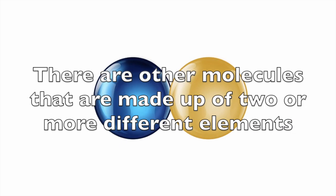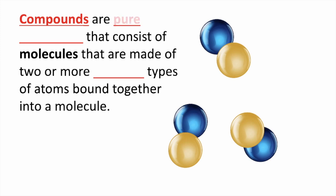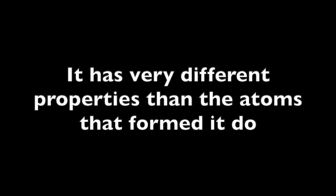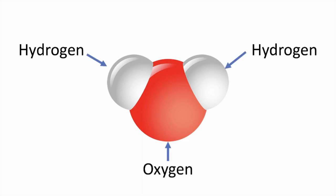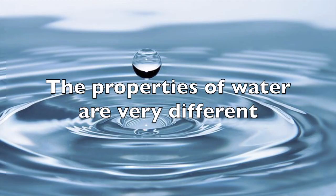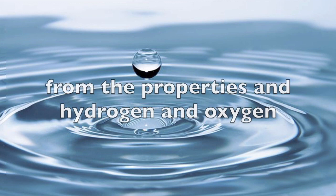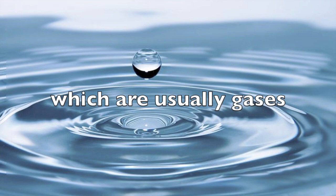There are other molecules that are made up of two or more different elements. Compounds are pure substances that consist of molecules that are made of two or more different types of atoms bound together in a molecule. The atoms in the compound are bound so strongly that the compound behaves like one substance. It has very different properties than the atoms that formed it. For example, water is made of two hydrogen atoms and one oxygen atom, but the properties of water are very different from the properties of hydrogen and oxygen, which are usually gases.